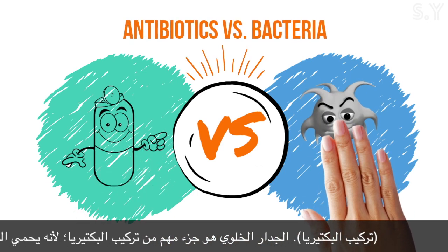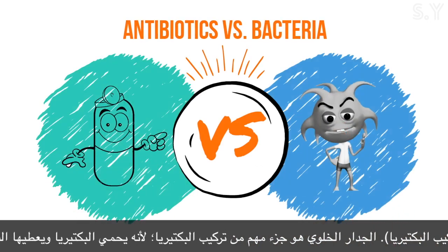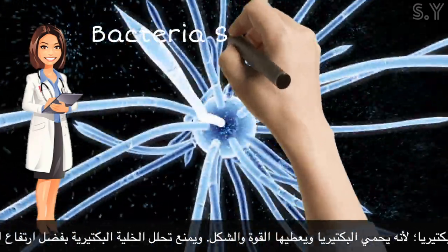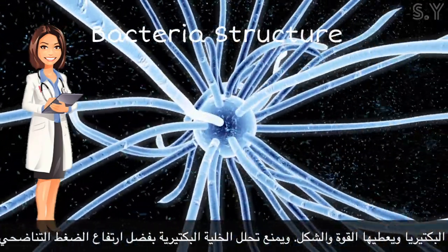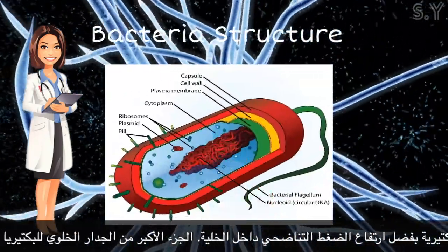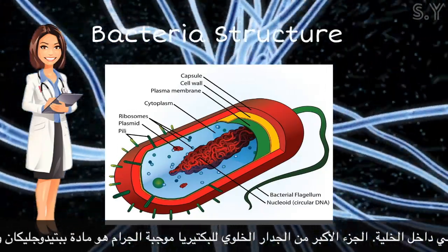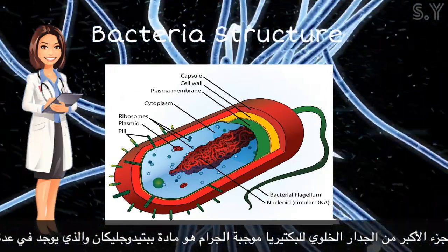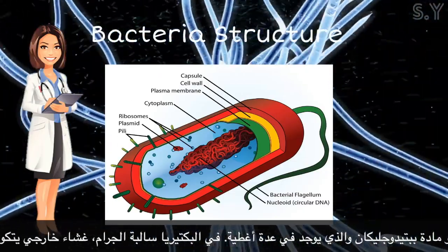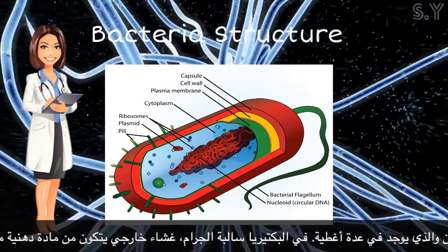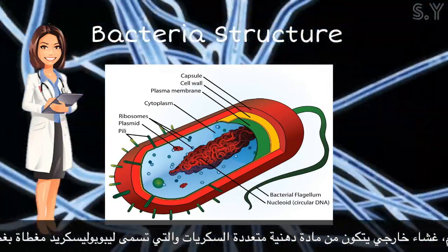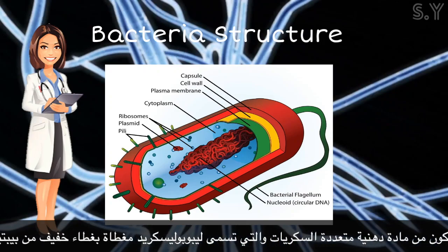Antibiotics vs Bacteria. Bacteria structure: the cell wall is a crucial part in the bacterium structure. It protects the bacterium and gives it strength and structure. It prevents cell lysis because of the high cytoplasmic osmotic pressure. The major part of a gram-positive organism's cell wall is peptidoglycan, which exists in several layers.